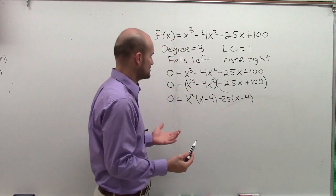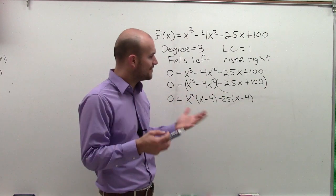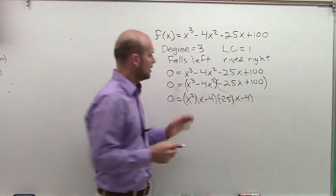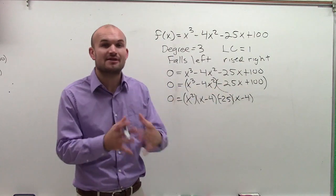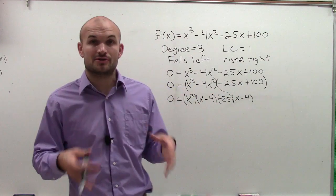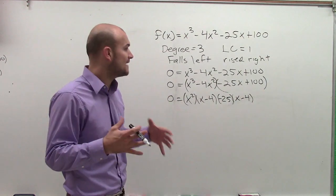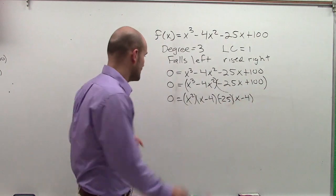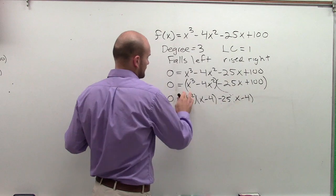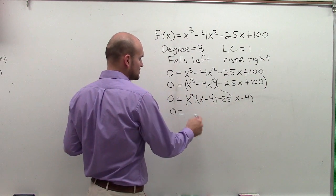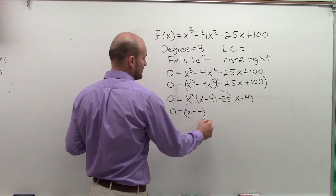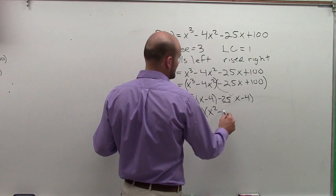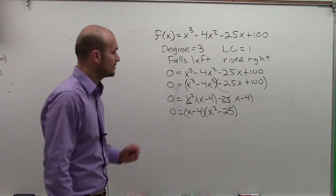So what you notice, ladies and gentlemen, is by factoring out, what I have done is just rewritten each one of these when they've been factored out. Now, the next thing I want to do is I want to take it a step further. Can I factor out a common term again? And you notice, yes, there's a common term of x minus 4 and x minus 4. So I'm going to factor out the x minus 4. So I say, 0 equals x minus 4 times what's left over: x squared minus 25.